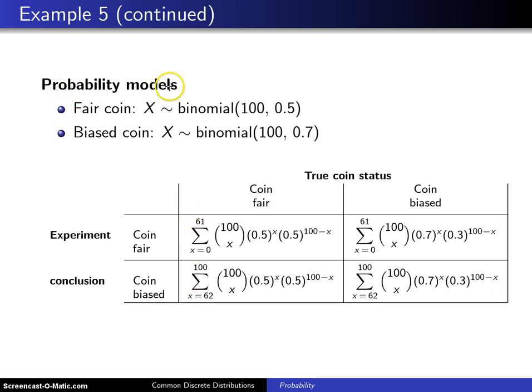There are two different probability models going on here, and the first is associated with a fair coin. When you have a fair coin, then X, which is the number of heads that occur in 100 flips of the coin, has the binomial distribution with n equals 100 and p of 0.5. And that, by the way, corresponds to this particular column. Notice that we have 0.5s everywhere.